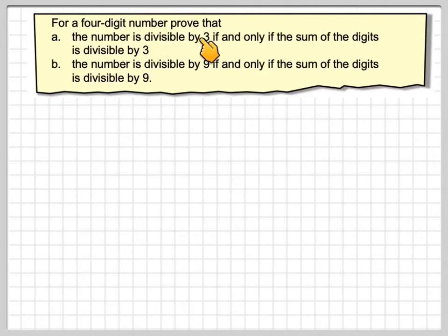For a four-digit number, prove that the number is divisible by 3 if and only if the sum of the digits is divisible by 3. B, the number is divisible by 9 if and only if the sum of the digits is divisible by 9.